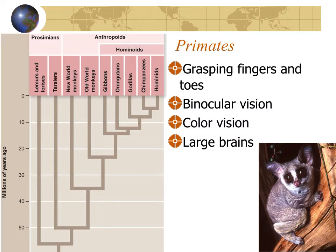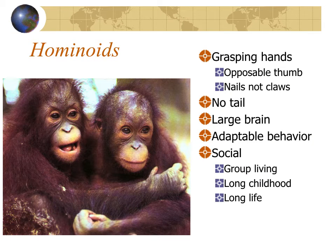Even among the mammals, we are most clearly related to the primates. All primates have grasping fingers and toes, forward-directed eyes with binocular vision and good color vision, and large brains. Among the primates, we are most closely related to the hominoids.